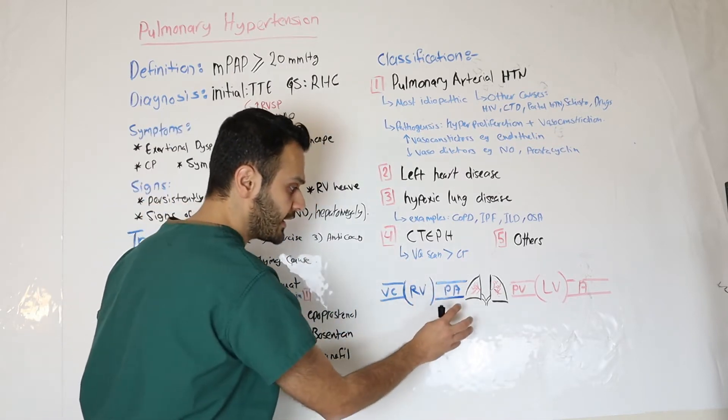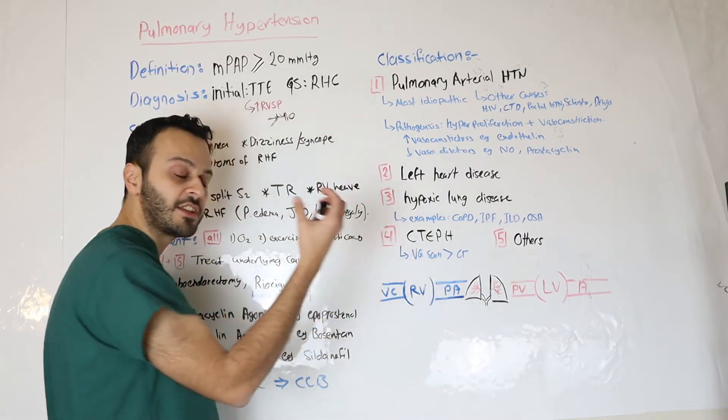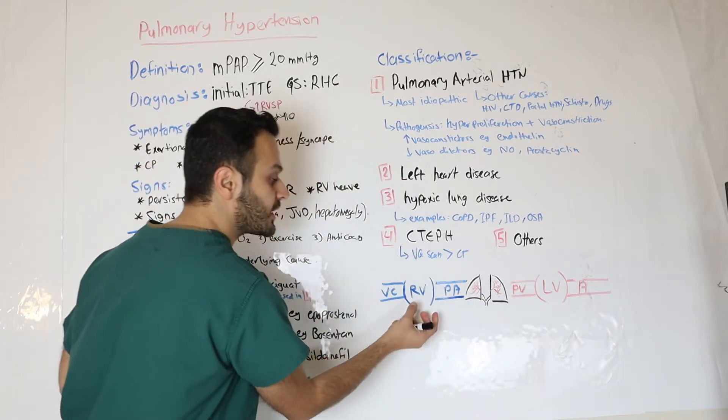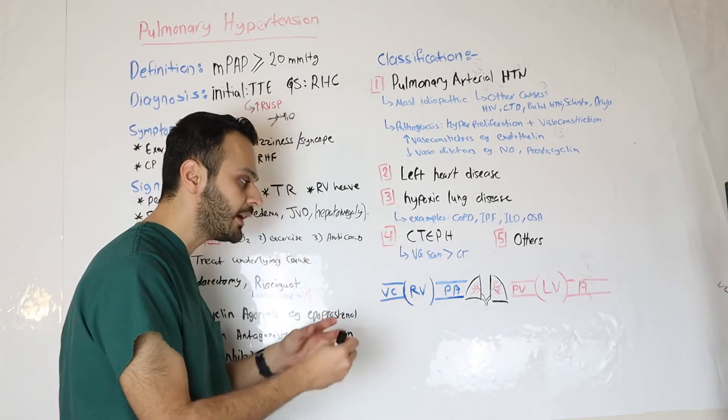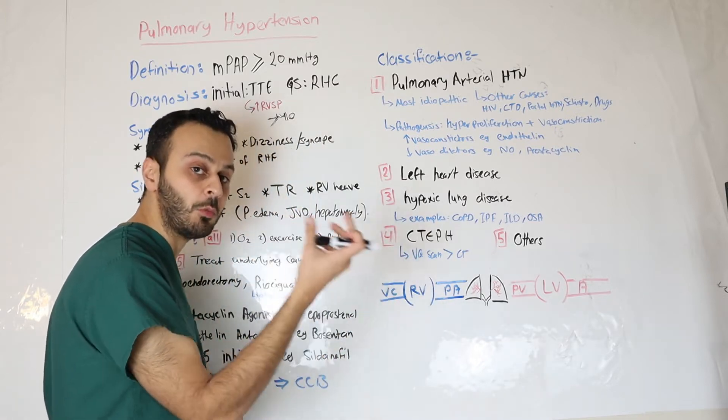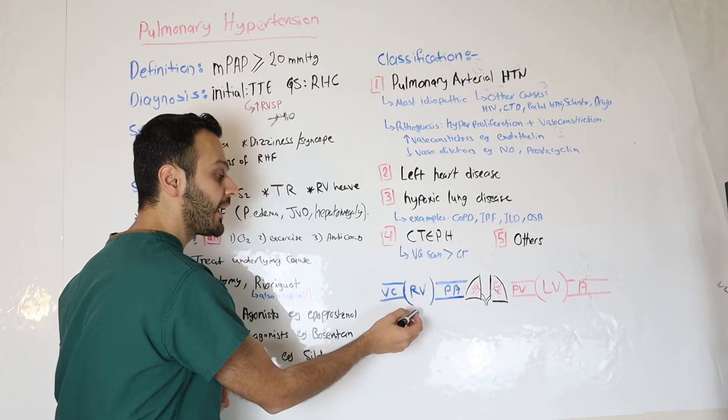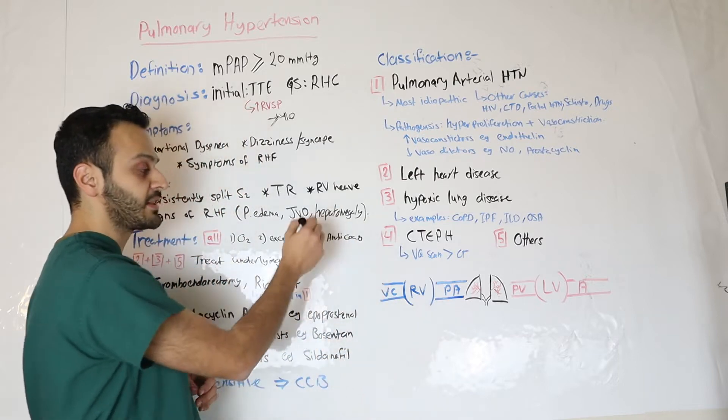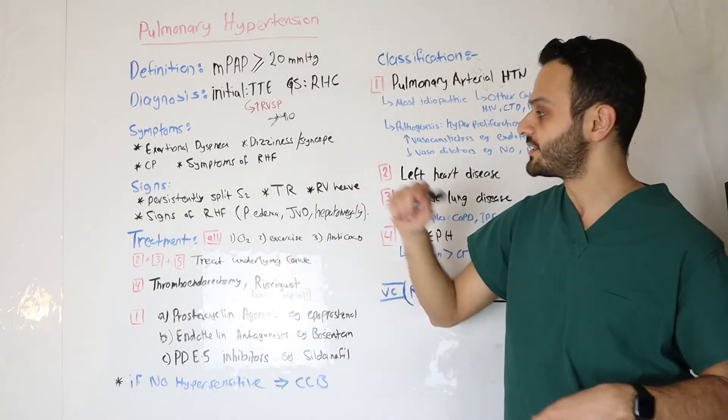The issue here is within the pulmonary vasculature itself, you have such a high resistance there, such that the right ventricle will have harder time pumping blood to the lung. With time, the right ventricle will eventually fail, and the blood will back up from the right ventricle to the rest of the body. And that's when you develop symptoms of right side heart failure.